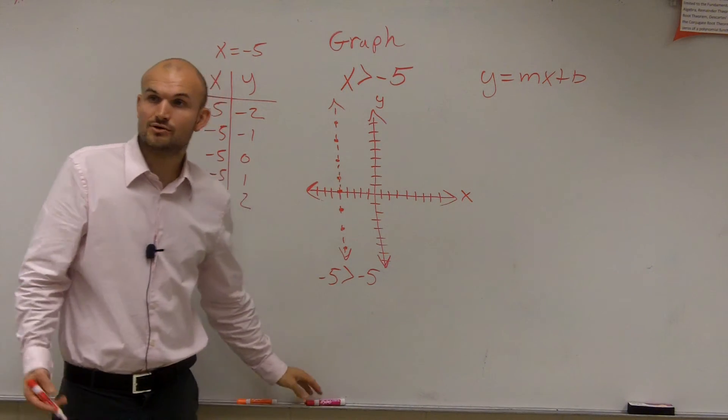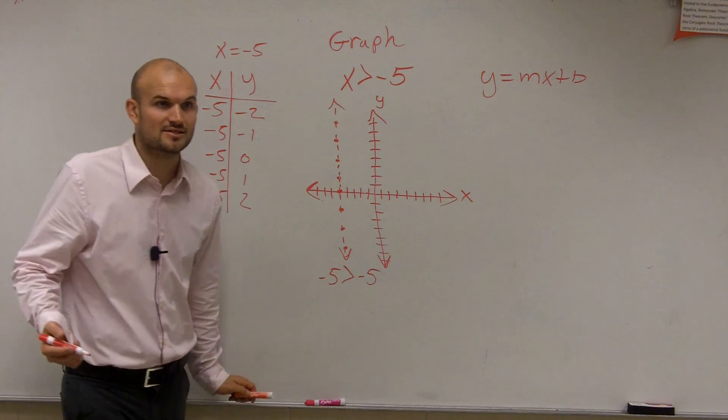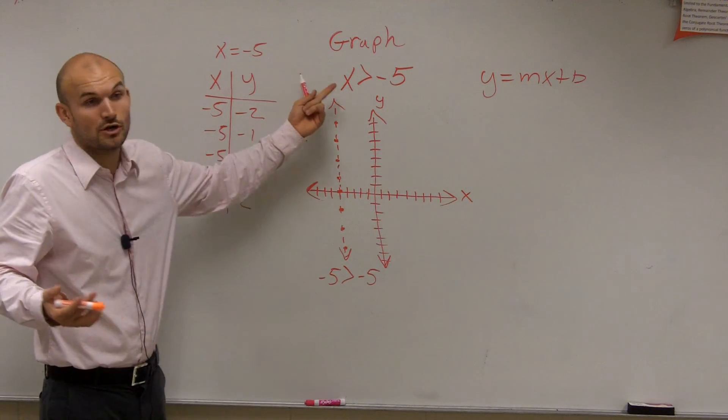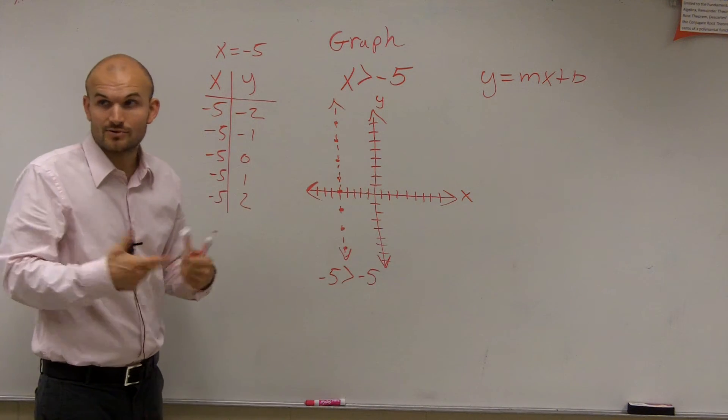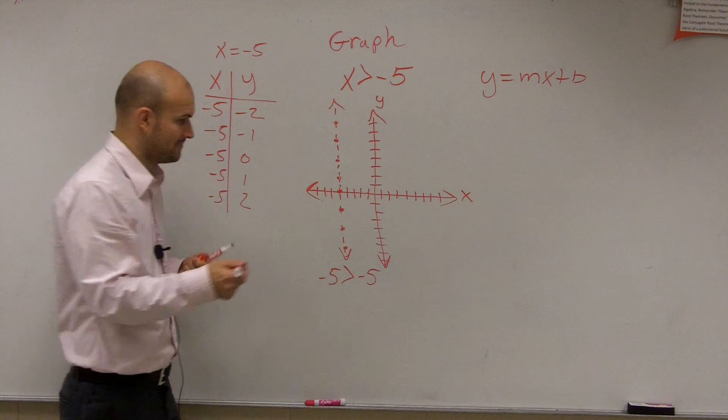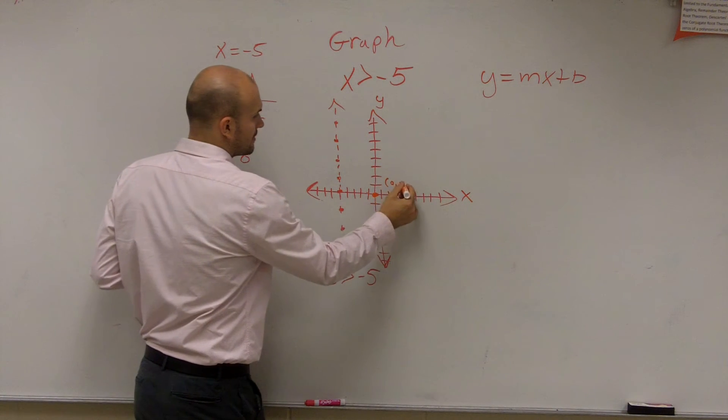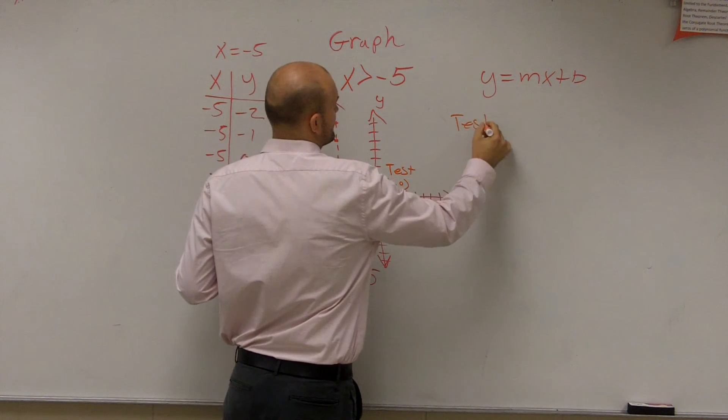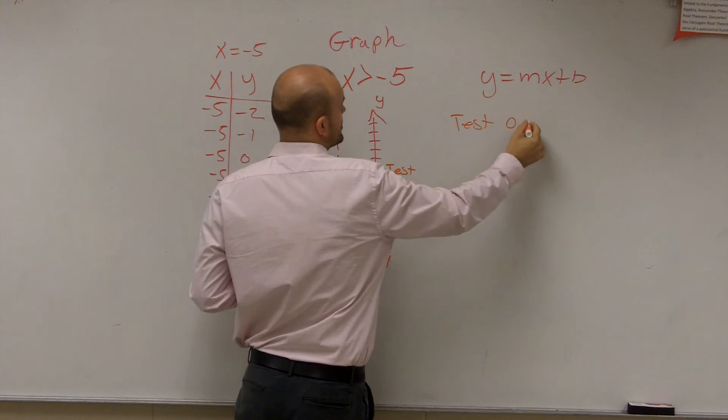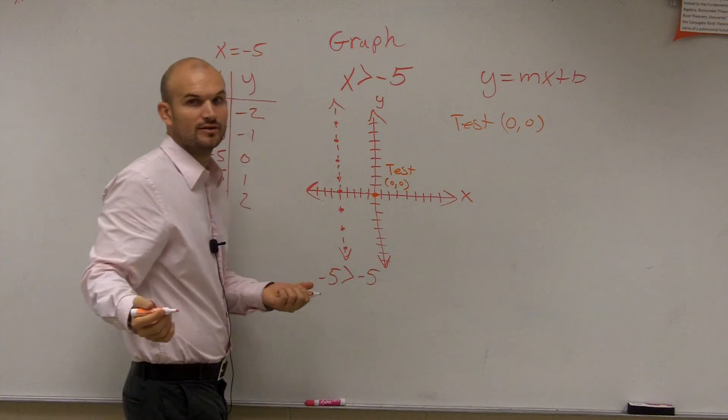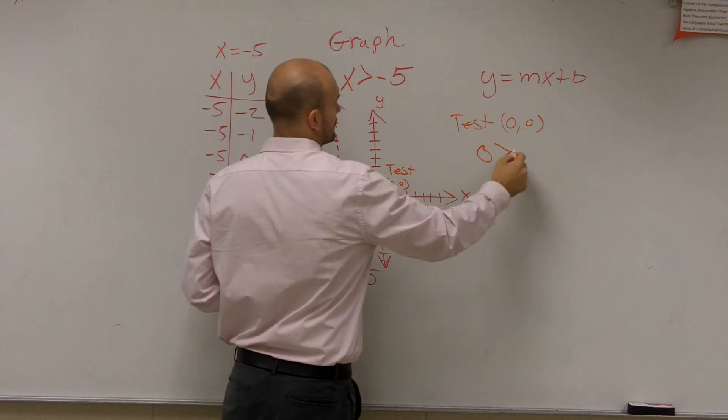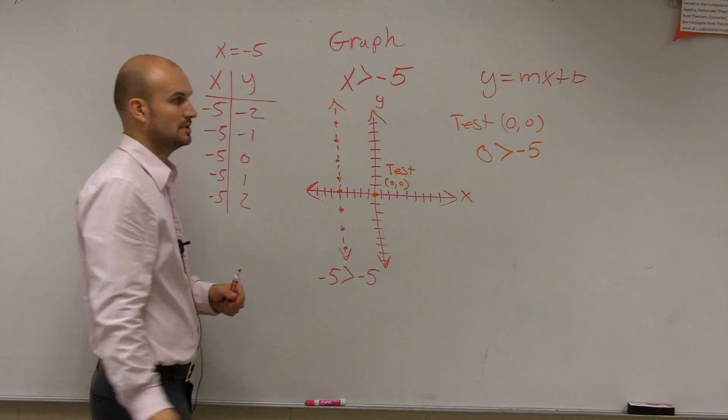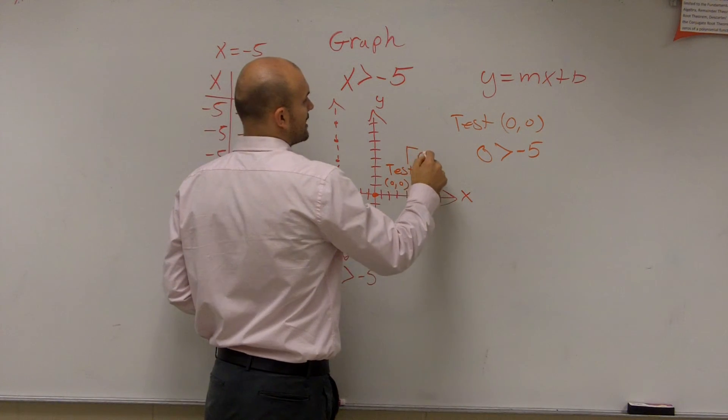But you can always do a test point. The next thing we do is let's do a test point. And what's the best test point to pick as long as the line doesn't go through it? 0, 0, right? Well, we don't have a 0, 0 in this one because there's no 0 to put in for y. So we can only really test the x value of it. But let's pick the point 0, 0. And we just write test. So I test 0, 0. Well, there's no place for me to put 0 for y. So I just put the 0 in for the x. Is 0 greater than negative 5? Yes, it is. So we write true.